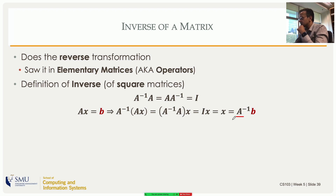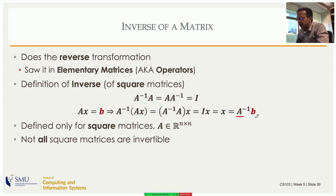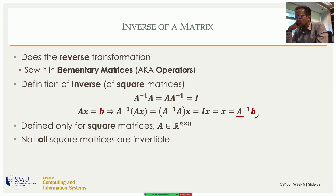A inverse reverses the operation of A. The inverse in the world of matrices is similar to the reciprocal in the world of numbers. Zero doesn't have a reciprocal because multiplying any number by zero gives zero and you cannot reverse that operation. Similarly, some matrices don't have inverses — it's not just the zero matrix that is singular; other matrices can also be singular.